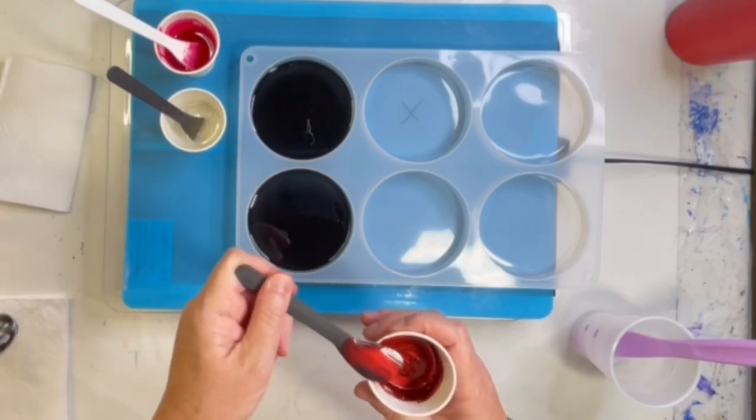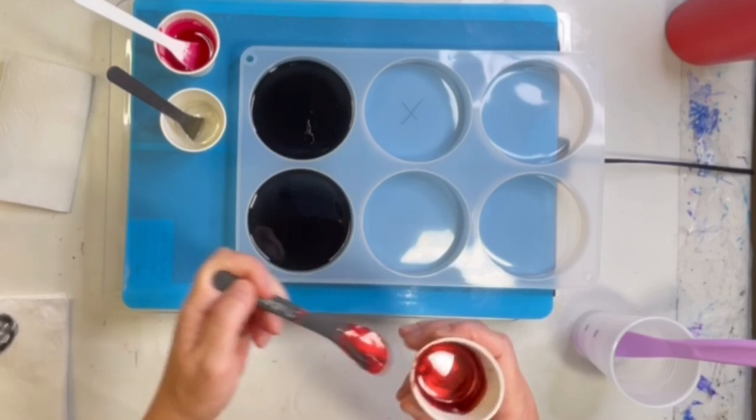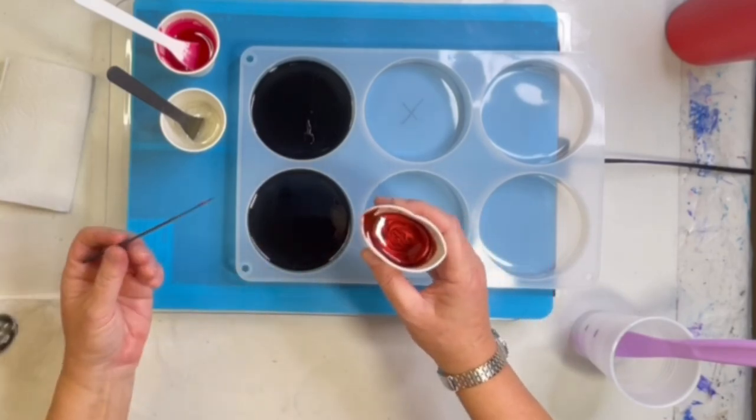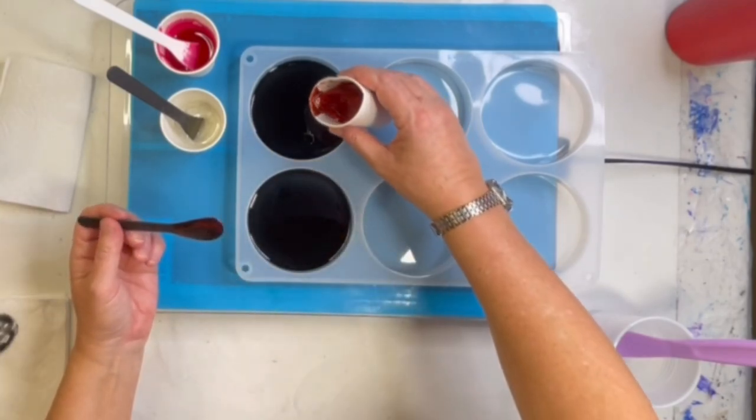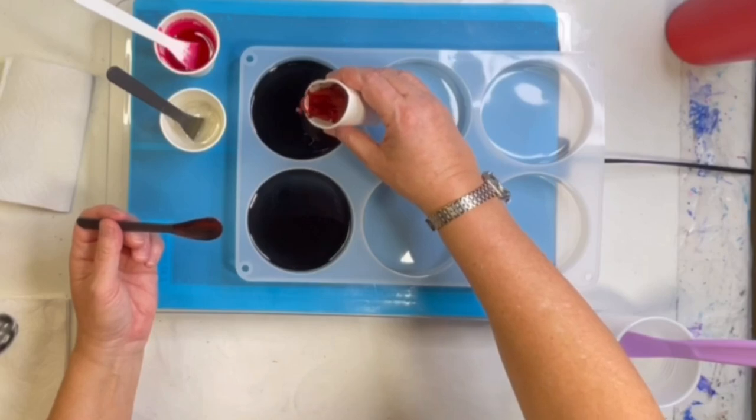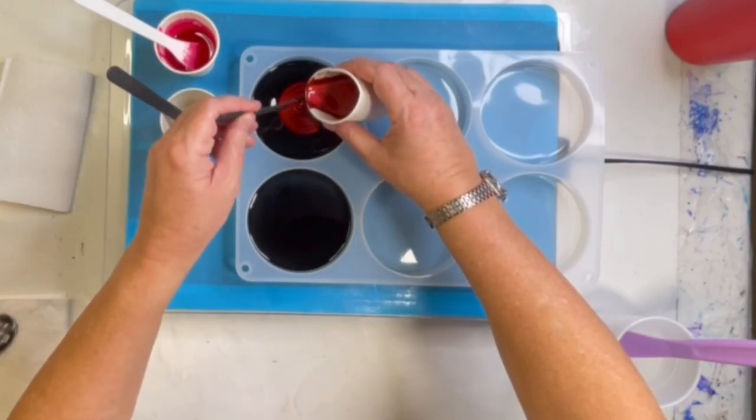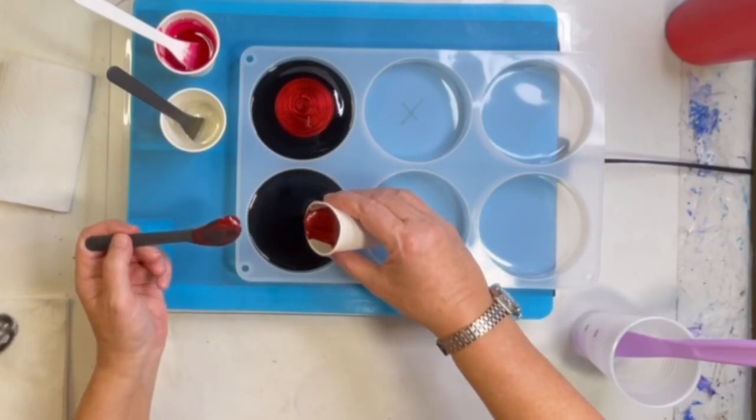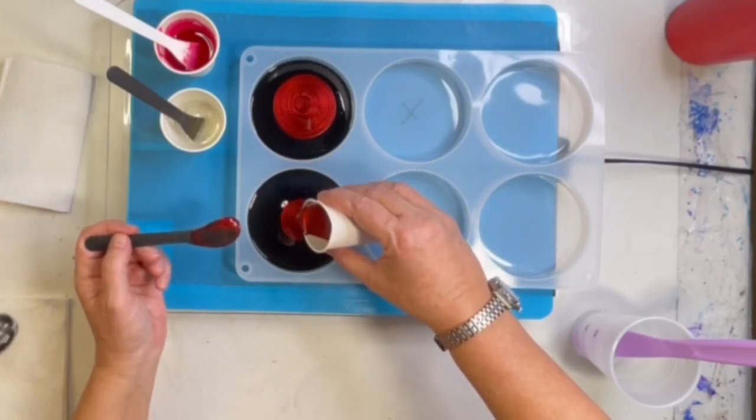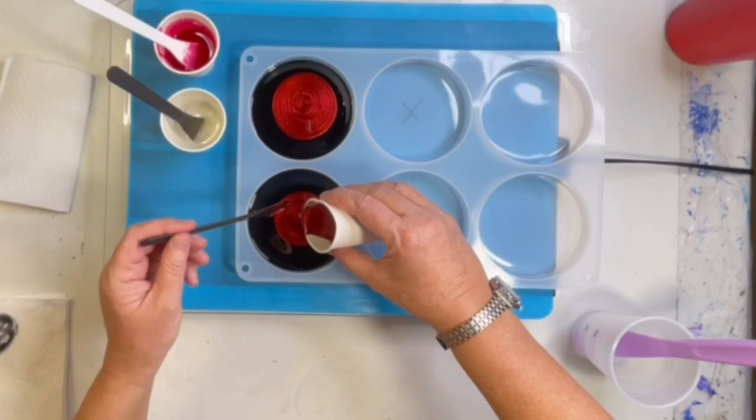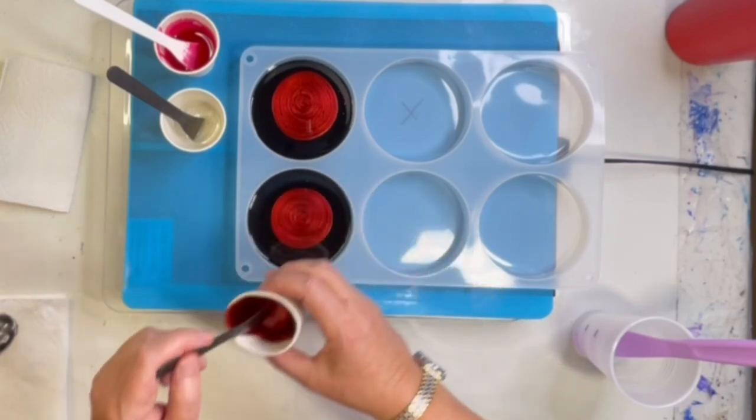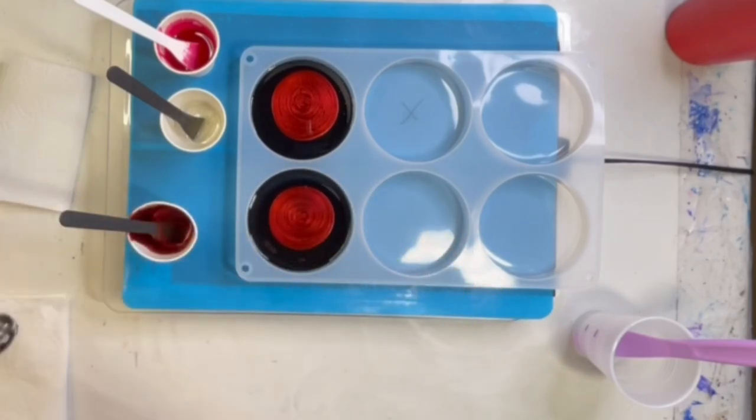So next we're going to do the colored one, which is my Grenache. I'm going to have to put a quarter of this in, but the first pour, you can put a little bit more than a quarter.